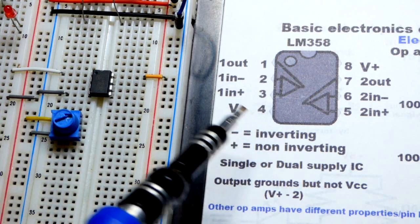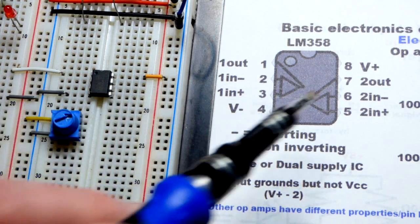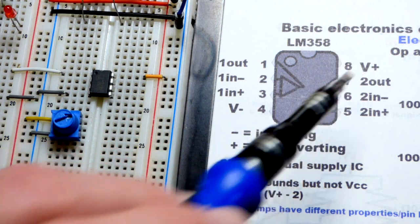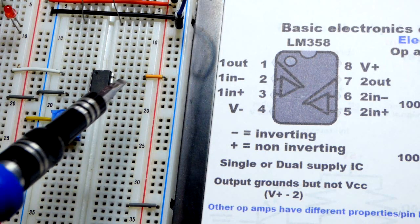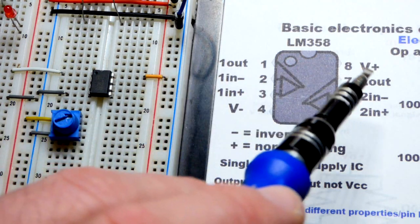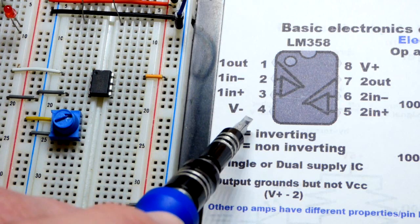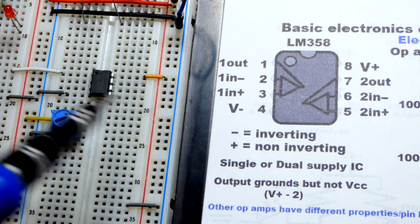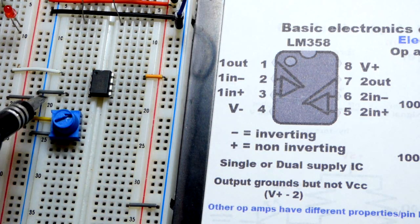But we have here the pin layout. So there's one op amp on the left side. That was the one we're using. And one on the right side. We do have to power the op amp though. And so we put V plus directly to the positive rail. Since we're using a single supply, pin number four goes to the negative rail.